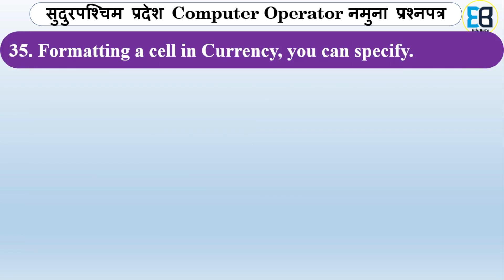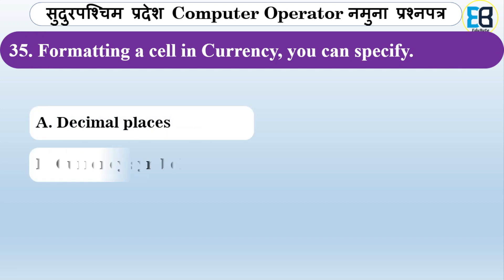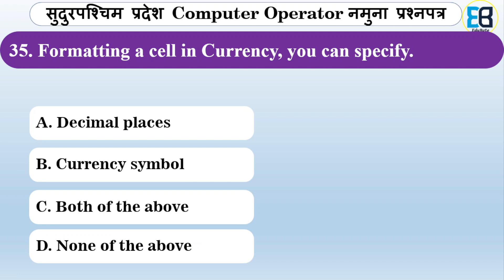When formatting a cell in currency, what can you specify? Options are decimal places, currency symbol, or both of the above. The correct answer is both — you can specify both decimal places and the currency symbol when formatting a cell in currency.